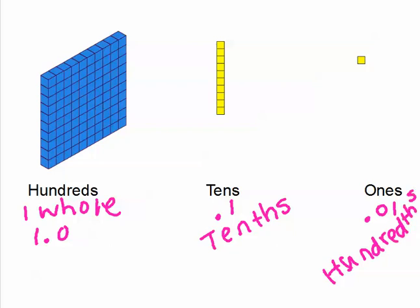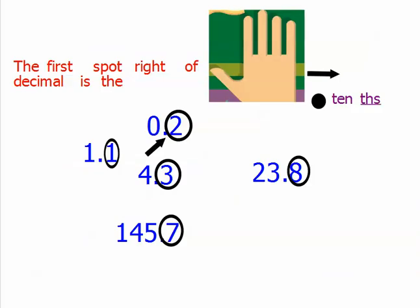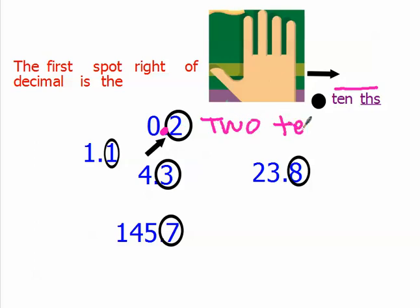Let's look at how we're actually going to use that. Quick review: the first spot to the right of the decimal is the tenths. So if this is our decimal point, the number directly to its right is in the tenths place value. For example, here we have .2 — the 2 is in the tenths place value, and we read it as 2 tenths.